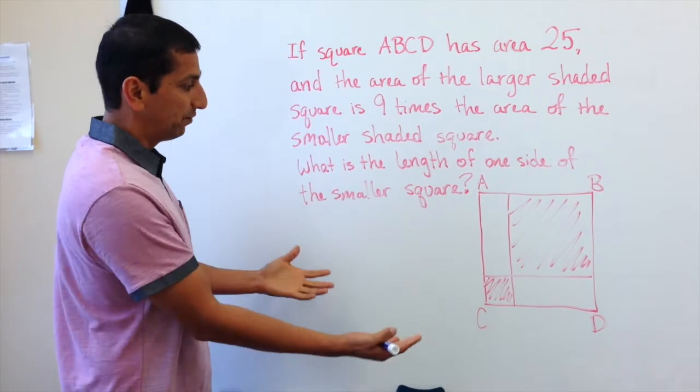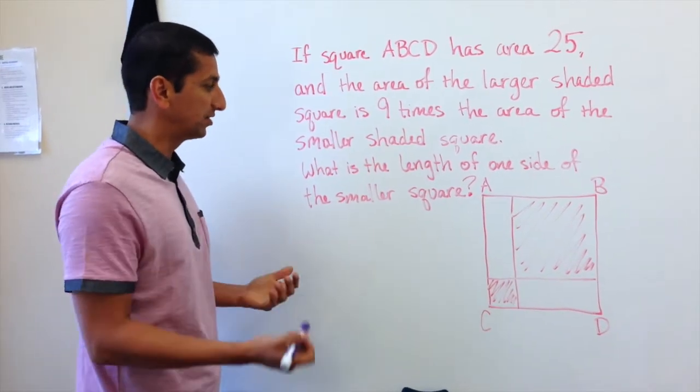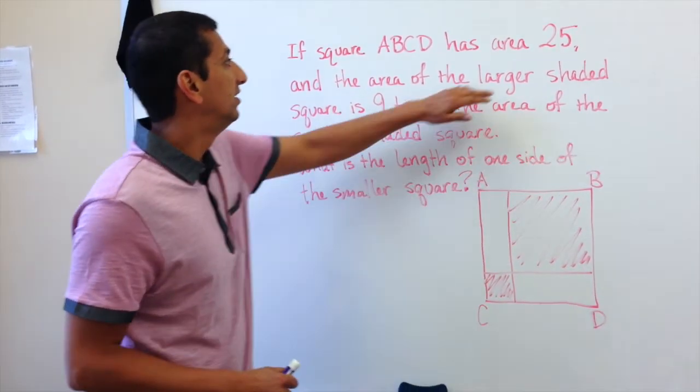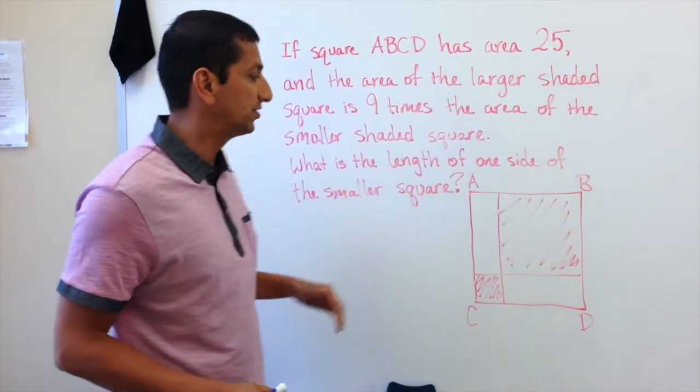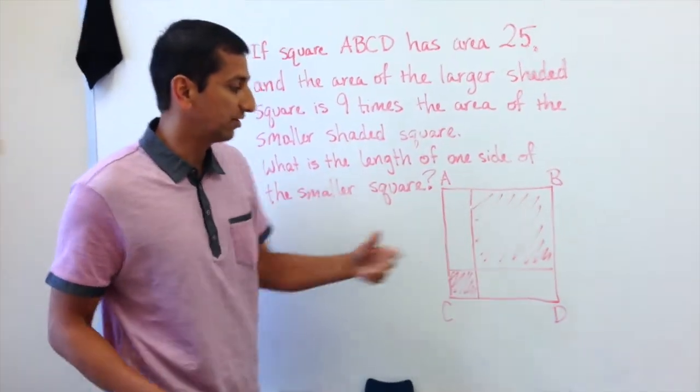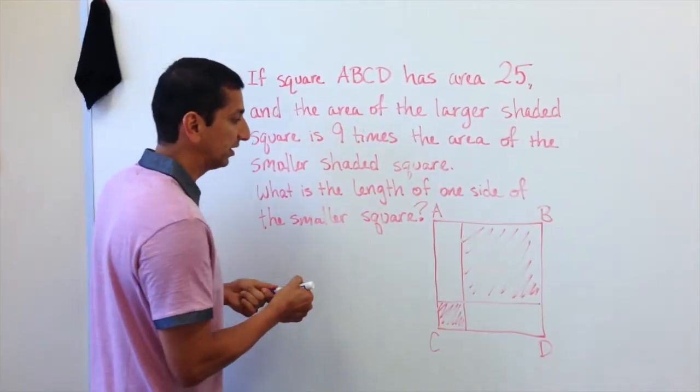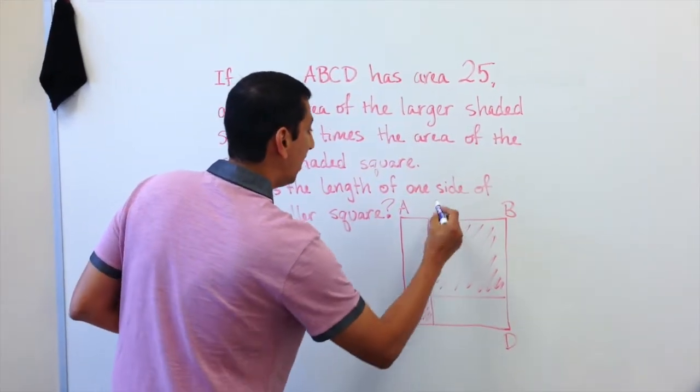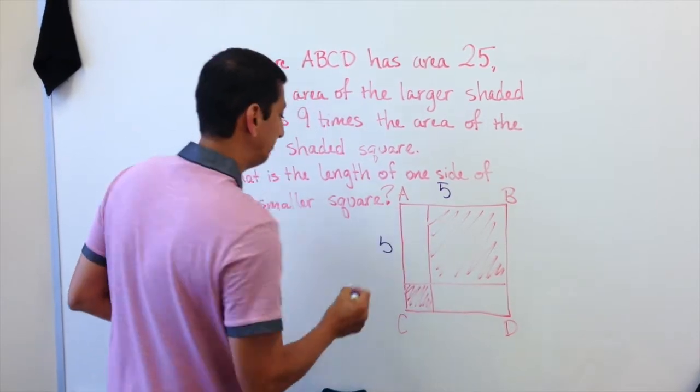And so at this point, there are no numbers on the problem. So let's start filling things in. We've got the fact that the area of the whole thing is 25 and all the shapes that are shaded in and the whole thing are squares. So pretty quickly, we can figure out that the side of one of these squares is five.